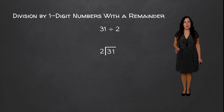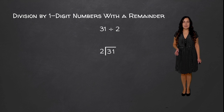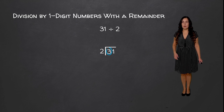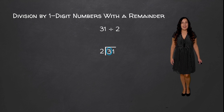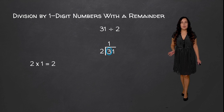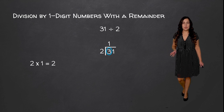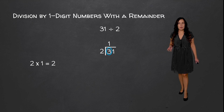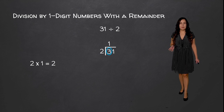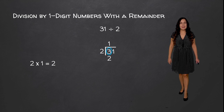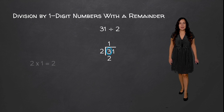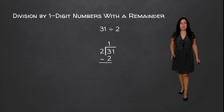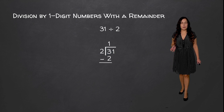Because 2 is a one-digit number we're first going to see how many times 2 goes into 3. Now 2 goes into 3 one time because 2 times 1 is equal to 2. And 2 times 2 would be too big because that's equal to 4. So we're going to write our 2 underneath our 3 and then we're going to subtract our two values.